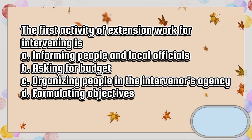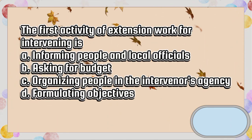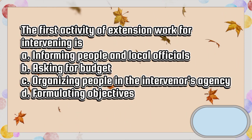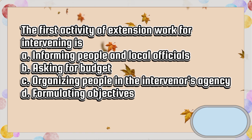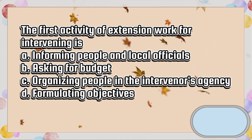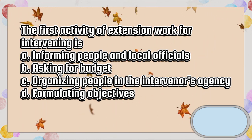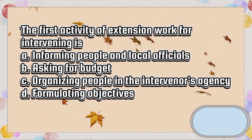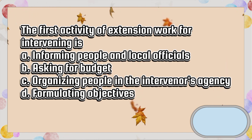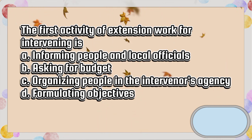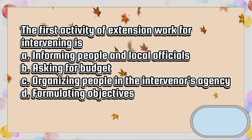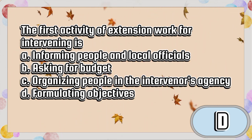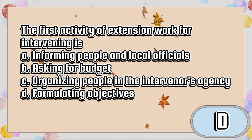The first activity of extension work for intervening is: A. Informing people and local officials, B. Asking for budget, C. Organizing people in the intervener's agency, D. Formulating objectives. The answer is letter D.